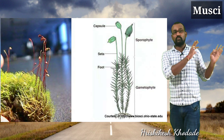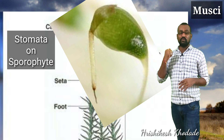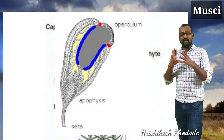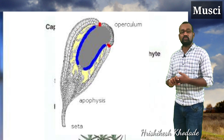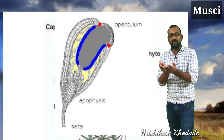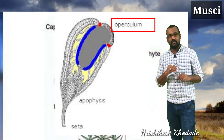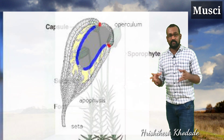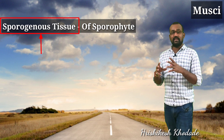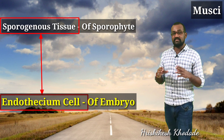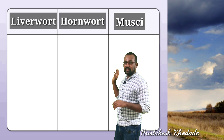The sporophyte in mosses shows foot, seta, and capsule structure, which is very advanced compared to the other two bryophyte groups. What is especially advanced is that they contain stomata on their sporophyte — a very peculiar characteristic. The dehiscence style is also unique: the sporophytic capsule breaks open from a specific region known as the operculum. The sporogenous tissue in the sporophyte of mosses is developed from the endothesium layer of cells of the embryo.